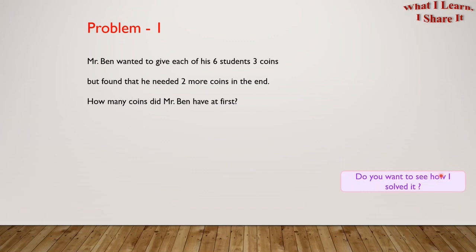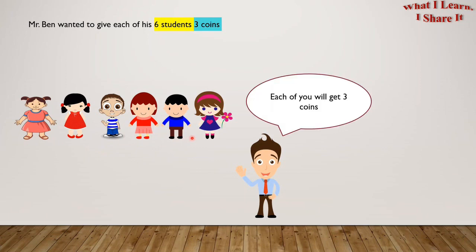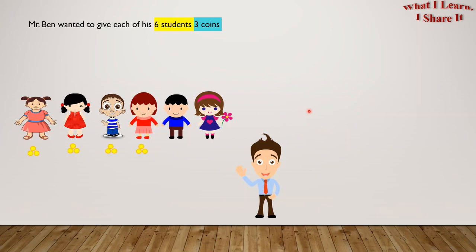Do you want to see how I solved it? I solved it in a step-by-step way. Let me show you. Mr. Ben wanted to give each of his six students three coins. This is Mr. Ben, and these are his six students. Each of you will get three coins. So he starts giving three coins to each student.